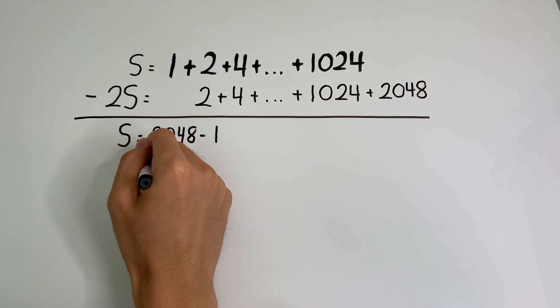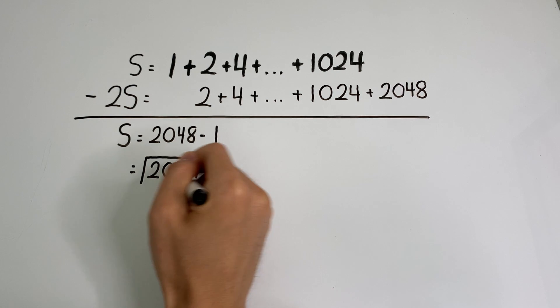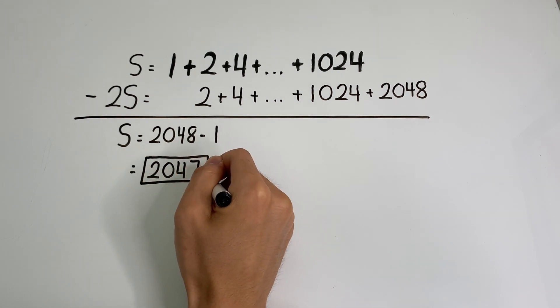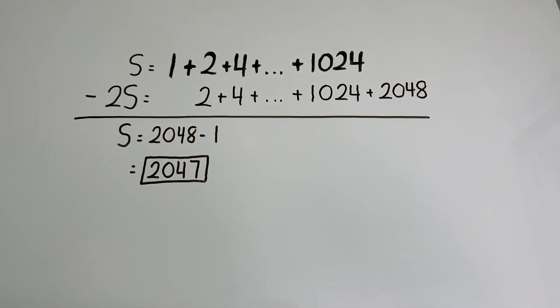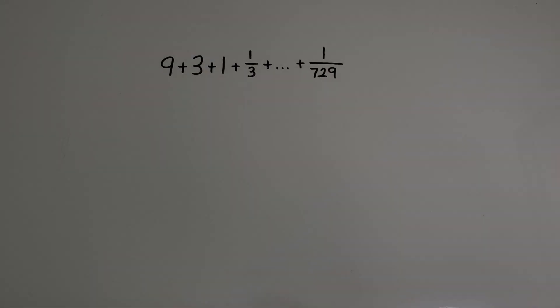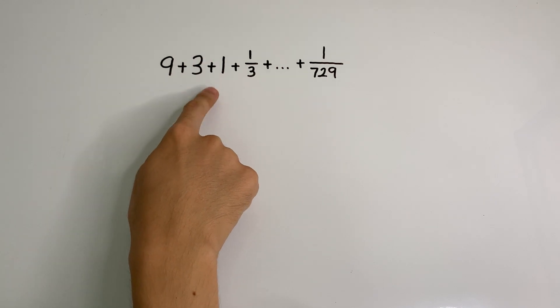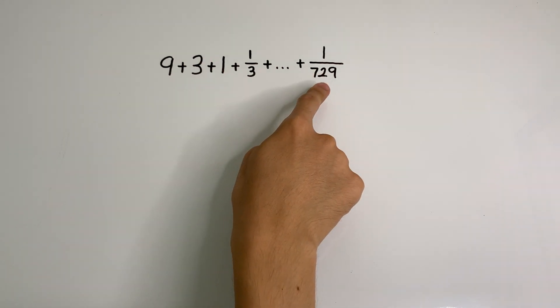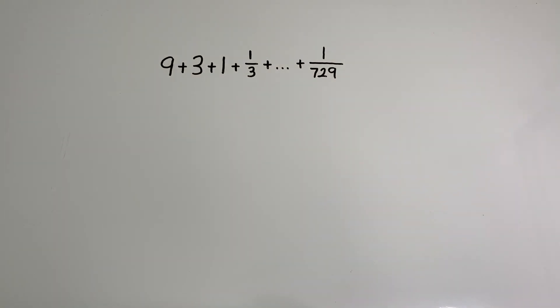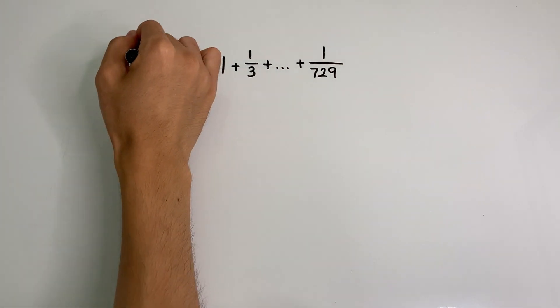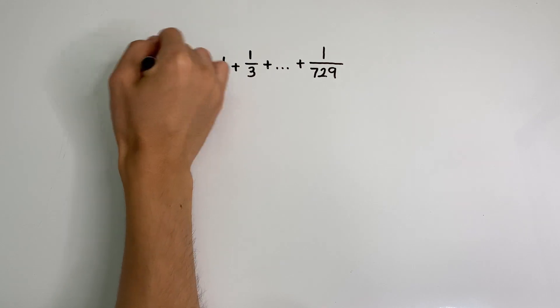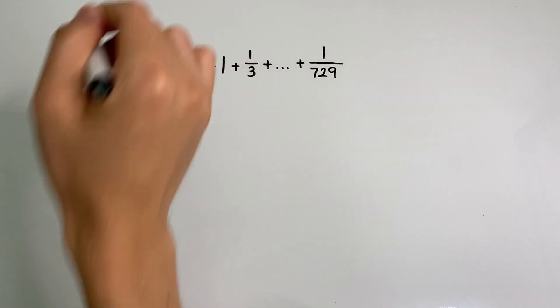So as you can see, absolutely no formulas were involved, and we still managed to find the answer. So now, we have another geometric series that goes 9 plus 3 plus 1 plus 1 over 3, all the way to plus 1 over 729. And we're asked to find the sum of the whole thing. So we're going to do the same thing. Let's start off by calling this whole thing S.